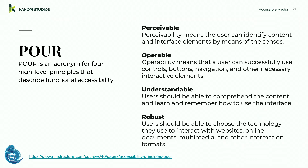Robust means users should be able to choose whatever technology they want to interact with your website — they shouldn't have to just use a mouse. They should be able to interact with online documents, multimedia, PDFs. Content has to be robust enough to be interpreted by many user agents, including assistive technology. And part of the robust guideline is maximizing compatibility for future tools too, because accessibility is a moving target.